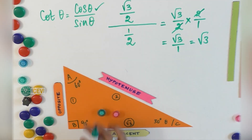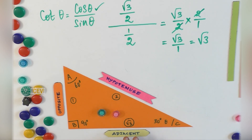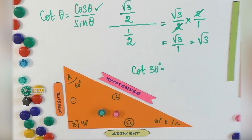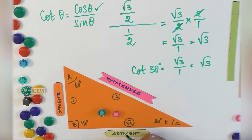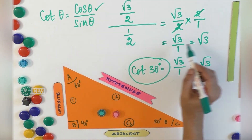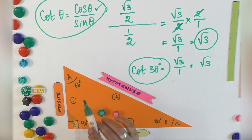Now find out what cot theta is for 30 degrees. Cot theta is nothing but adjacent by opposite. So cot 30 degrees equals adjacent by opposite. The adjacent is square root of 3 and the opposite is 1, so cot 30 degrees equals square root of 3. And cos 30 degrees by sine 30 degrees also equals square root of 3. We have proved that cot theta equals cos theta by sine theta.